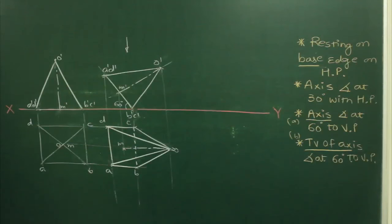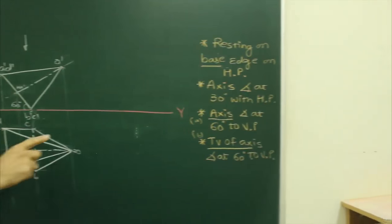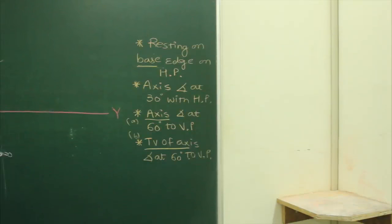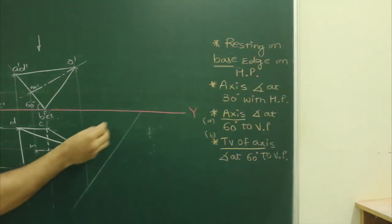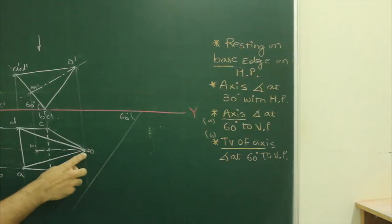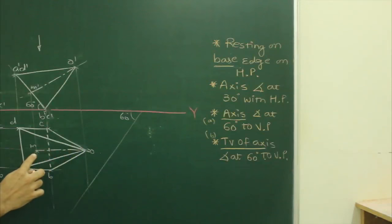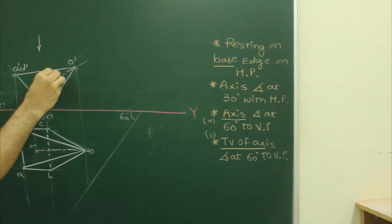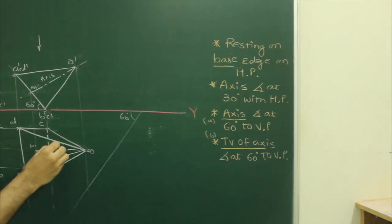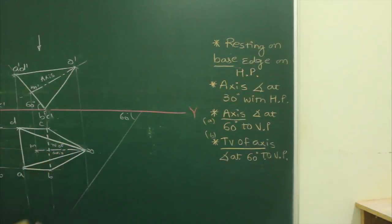Now we look at Case A and Case B. The axis is inclined at 60 degrees to the vertical plane. We draw 60 degrees and now need to draw the axis. If you recall lines, when they say axis is inclined at 60 degrees to vertical, that means they are asking for the true length.